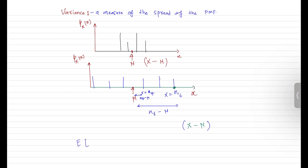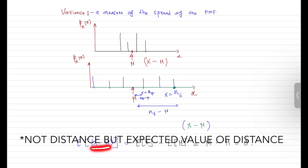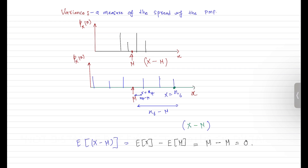Using linearity, the expected value of (X − μ) equals the expected value of X minus the expected value of μ. Since E[X] = μ and the expected value of a constant μ is just μ, this gives μ − μ = 0. So this distance that we are calculating will always be zero, and in terms of mathematics that is not useful.